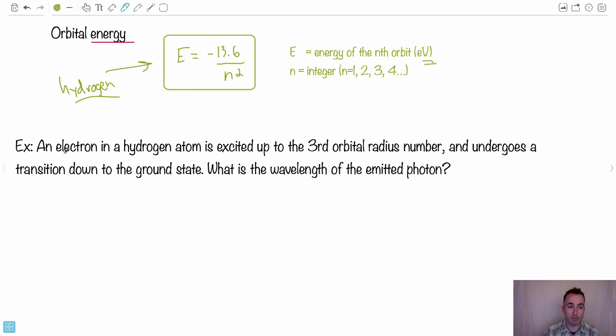Maybe it's a good idea to just do this question here. So just to have a little bit of practice, this is an exam kind of question. So we have an electron in a hydrogen atom. It's excited up to the third orbital radius number. That means now it's at N equals three. Does that make any sense? Then it undergoes a transition down to the ground state. What does that mean? Ground state is N equals one, not zero, but one.